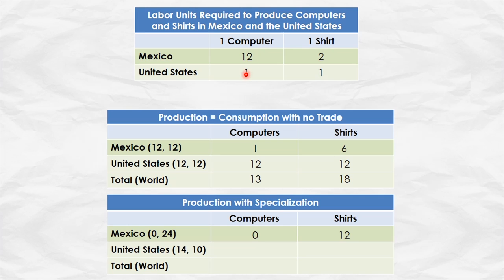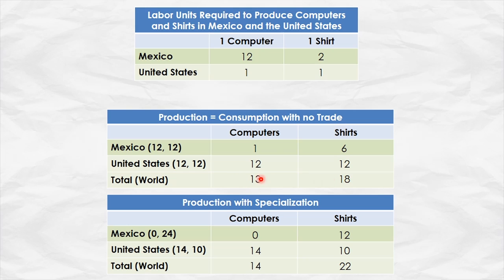Because it's one unit of labor per computer and one unit of labor per shirt in the United States, we simply get 14 computers and 10 shirts. Now here's the key — look at the totals. We now have 14 computers and 22 shirts. Total world production has gone up. Before, without specialization, we had 13 computers and 18 shirts. Now we've got 14 and 22 — a big increase.